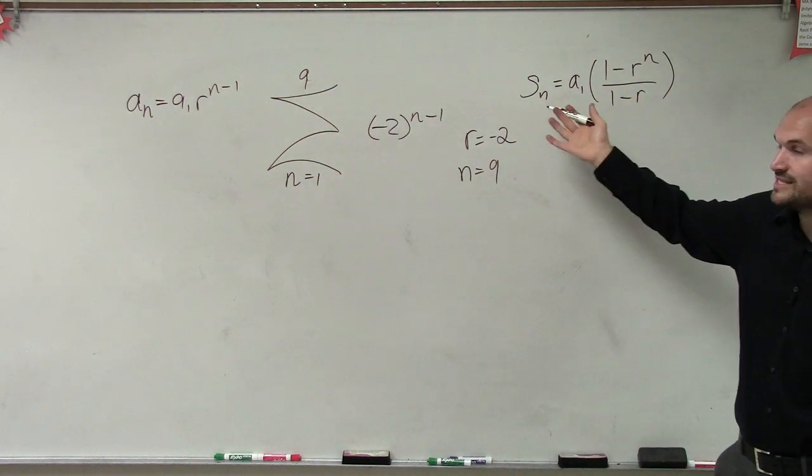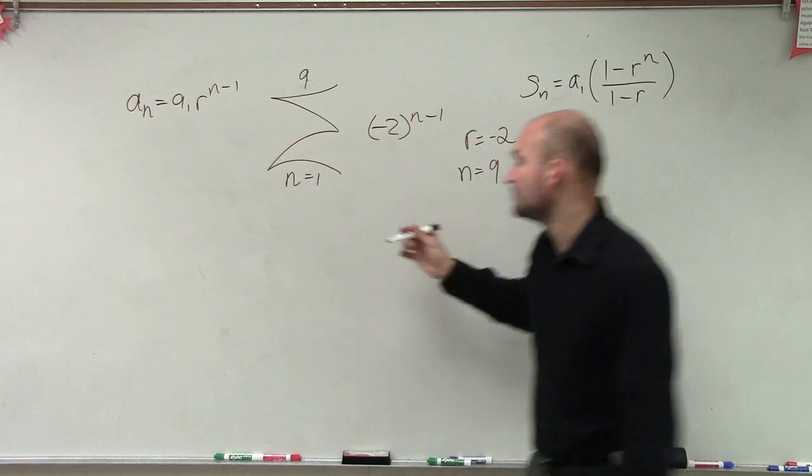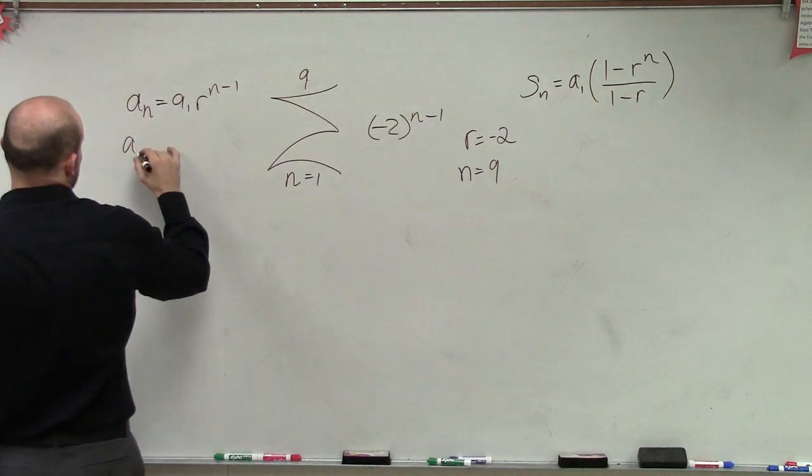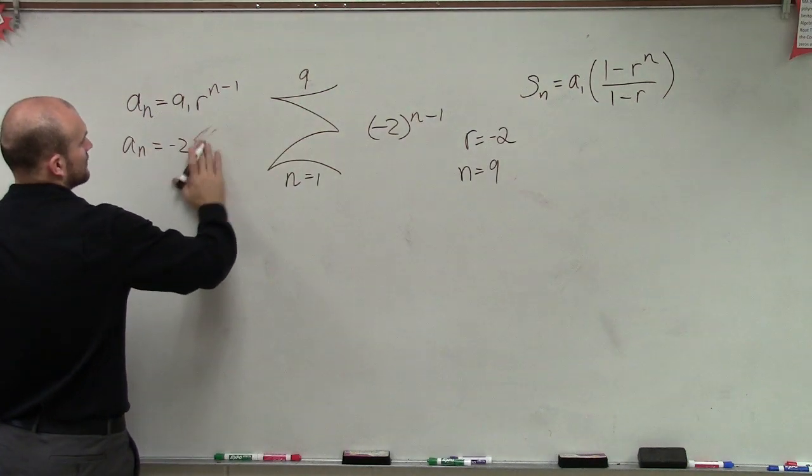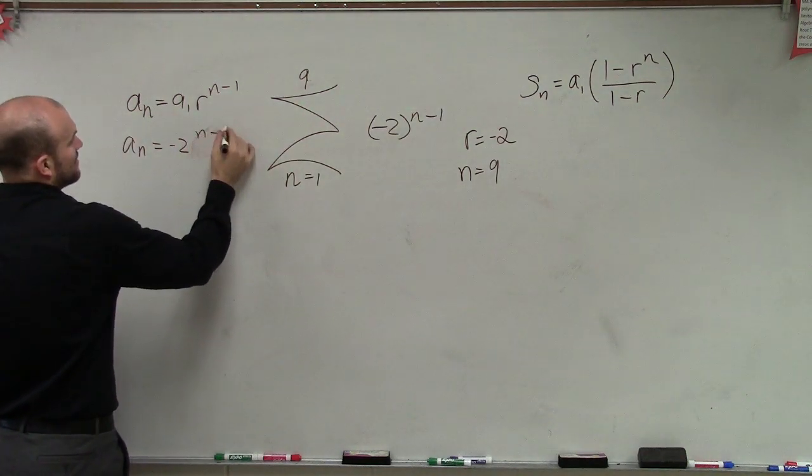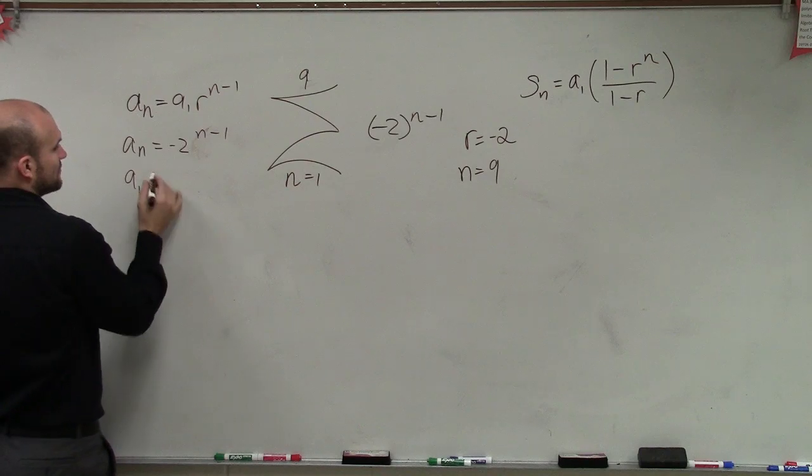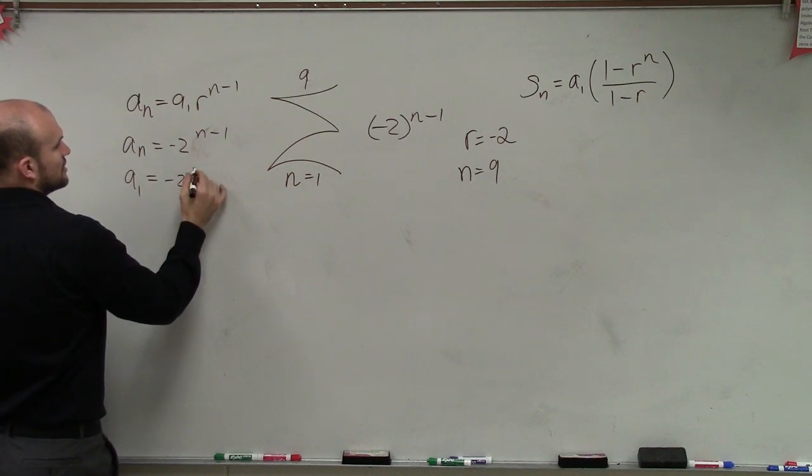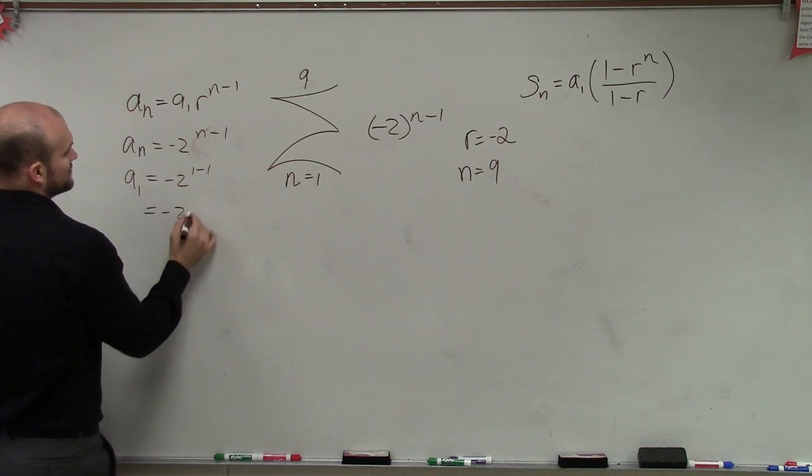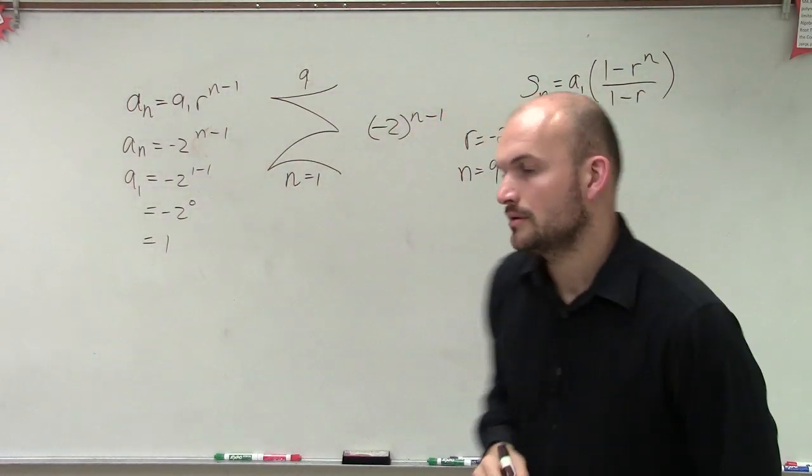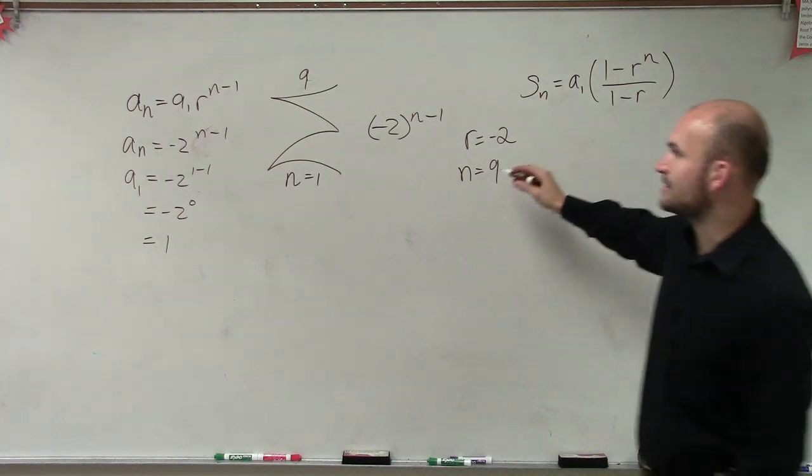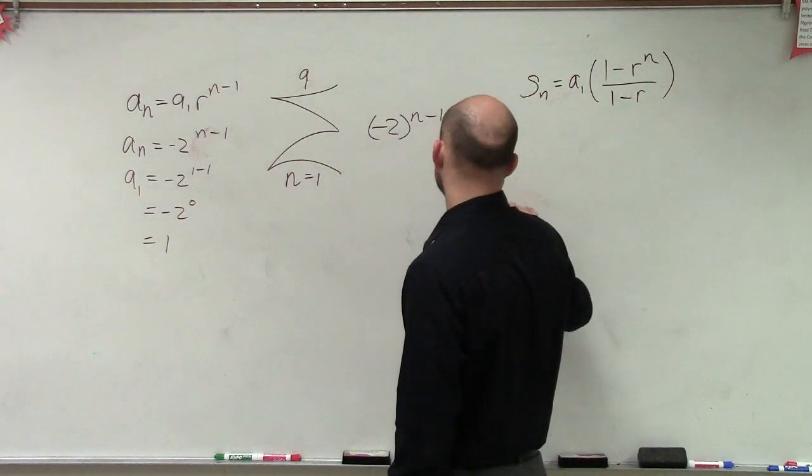And then a sub 1 would be your first term. So if I have a sub n in this case is negative 2 to the n minus 1, if I found out what a sub 1 is, which would be negative 2 to the 1 minus 1, which is negative 2 to the 0 power, which equals 1. So now I know that a sub 1 is equal to 1.